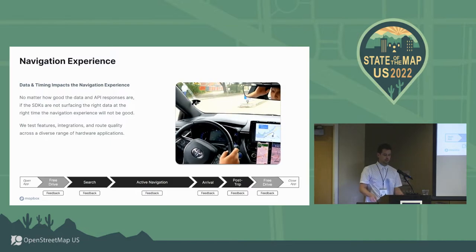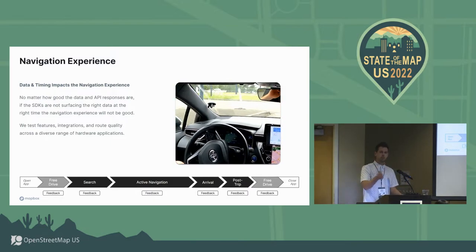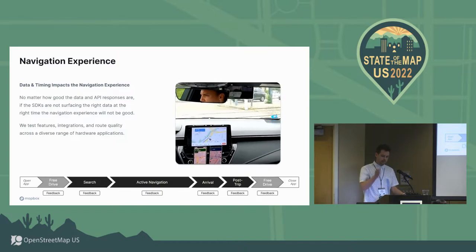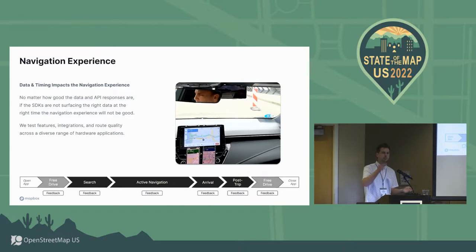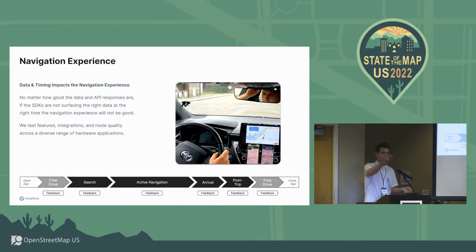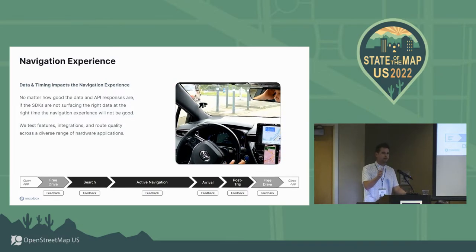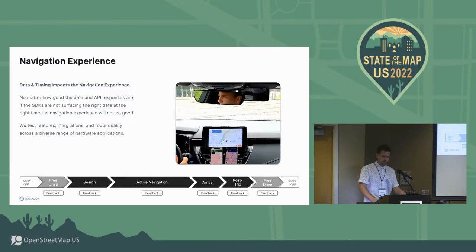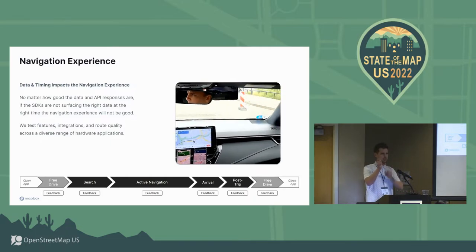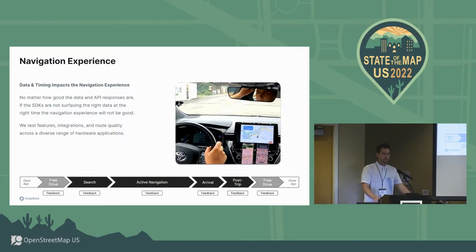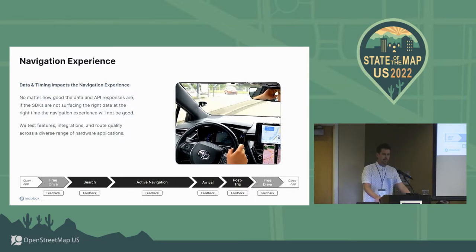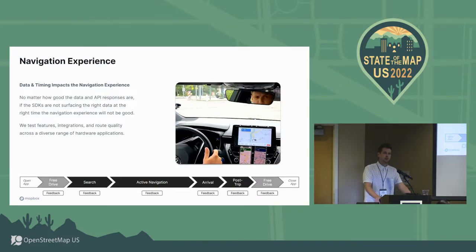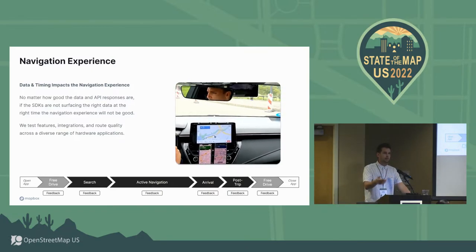Let's talk about the navigation experience. You see this user flow all the way from when someone opens the app or any customer application, all the way to when they close it. We're collecting feedback along the way — maybe the app is open, the location shows where the person is on the map, they search for a destination, begin the route, arrive at the destination, maybe provide some feedback about how the trip was, and then close the session. Most insights come from the center section: active navigation. We rely on the data to make sure that it's a high-quality experience consistently across different applications.